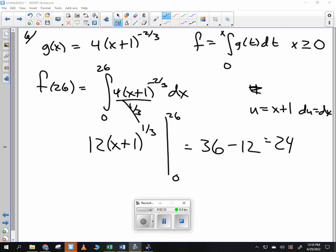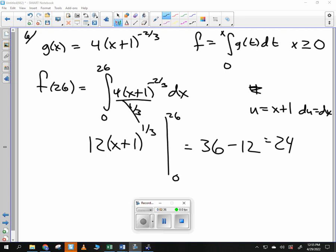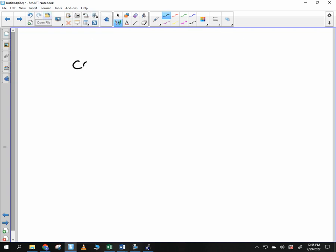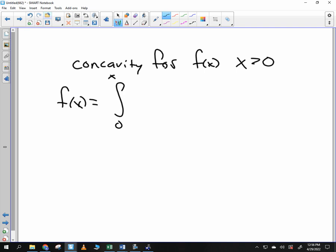All right. So then the second part says, determine the concavity for f of x for x greater than 0 and justify your answer. So notice that f of x is equal to the integral from 0 to x of 4 times x plus 1 to the negative two-thirds dx. Super important question, and this is something you'll use as you move forward. Tell me anything about concavity.